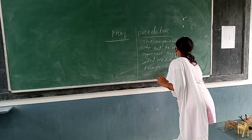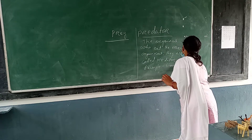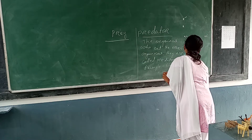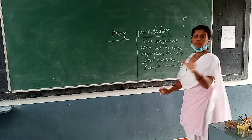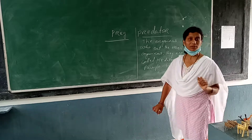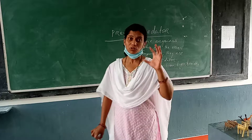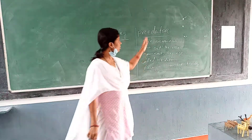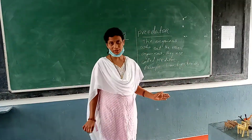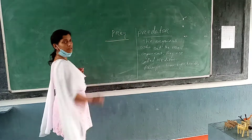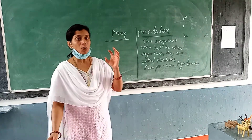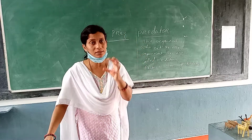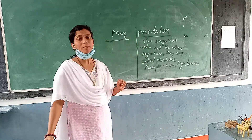Examples of predators are lion, tiger, fox, and so on. Fox also kills the rabbit. So the animals that kill other animals are categorized as predators. The animal that the predator is attacking and eating is called the prey.